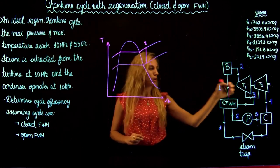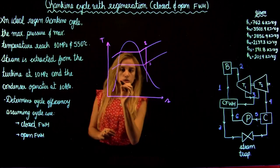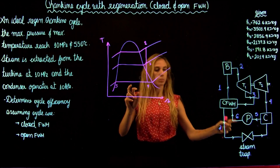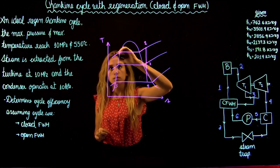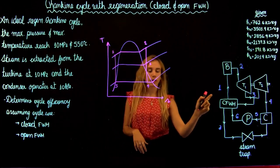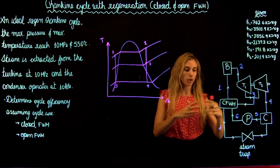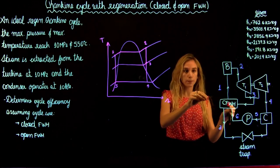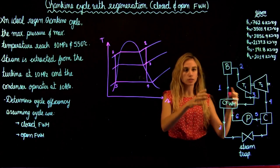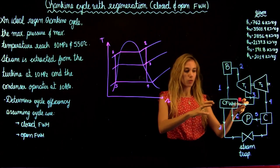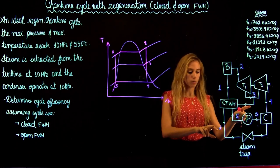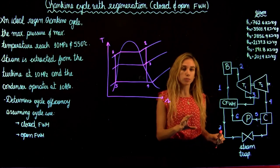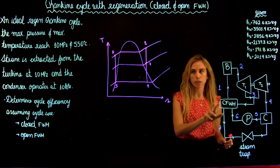Then we go down to the condenser at state 4, and after the condenser we go to state 5 where we're in the liquid state. The liquid then gets pumped up to state 6 at higher pressure. In a closed feed water heater, two flows pass through without mixing — the flow from 6 to 1 goes through the pipes, and the flow from 3 to A goes through the shell. There is no pressure change in the closed feed water heater, so we always stay on the same pressure line.